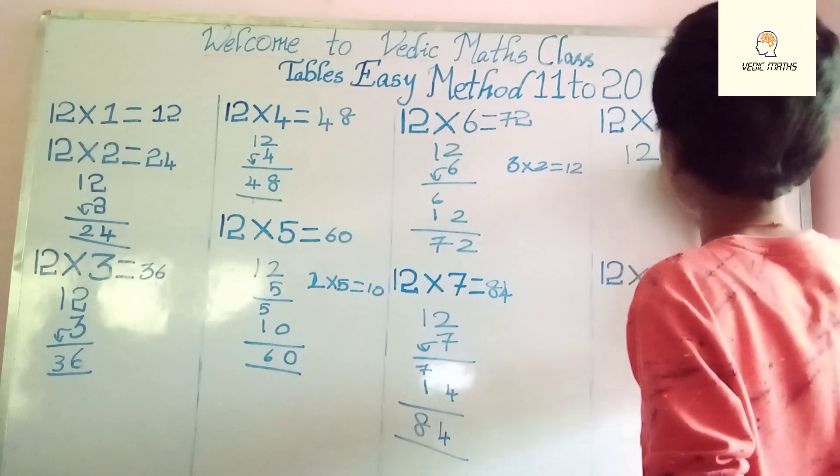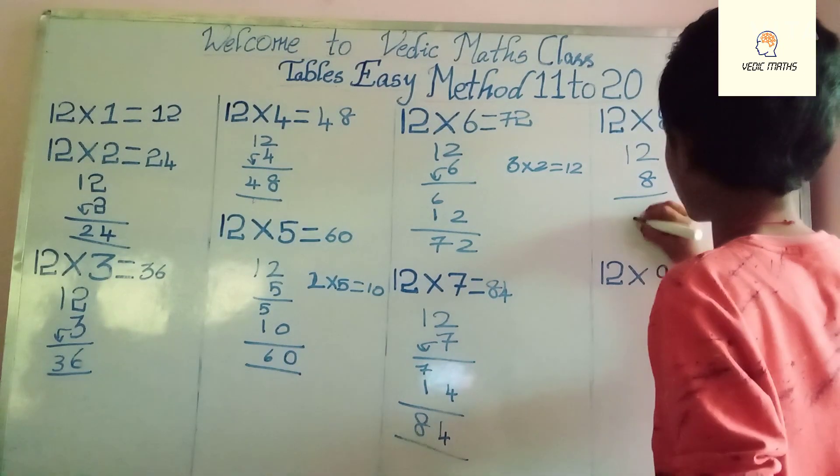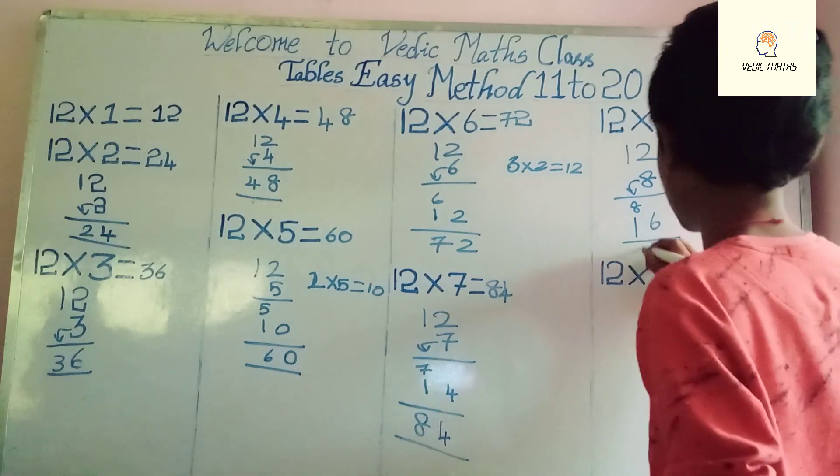12 into 8, that's 8 2's are 16, write 6 here and 1 here, write the multiplier 8 here, and that's 96.